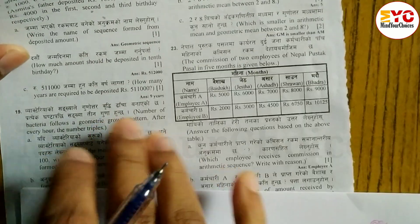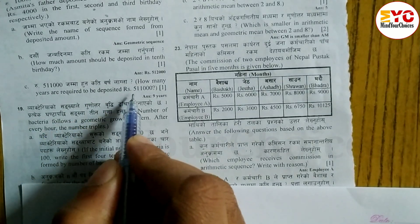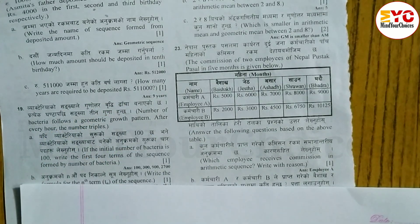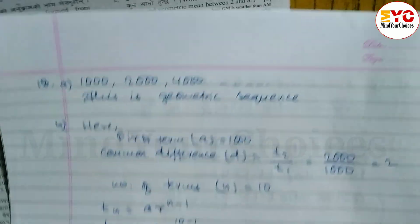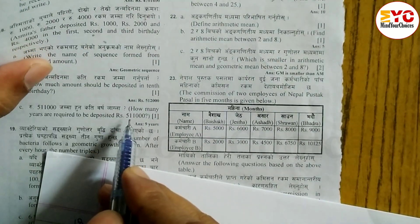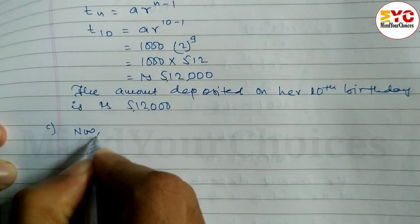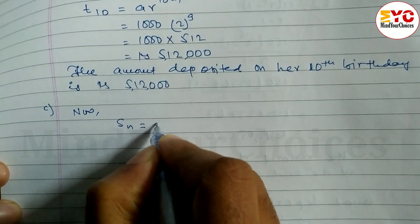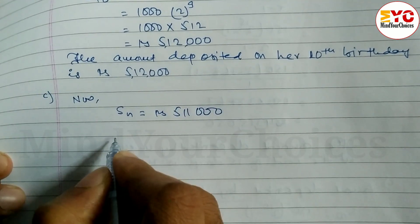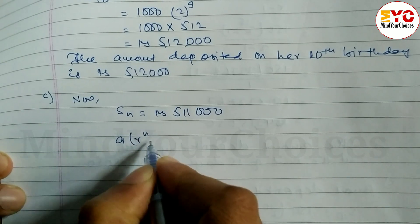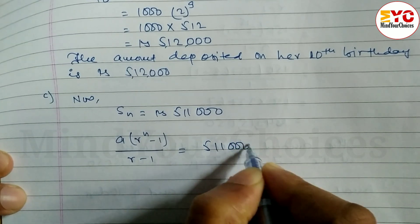Now look at Part C: how many years are required? What is n? To deposit rupees 511,000. The sum formula is: a times (r to the power n minus 1) divided by (r minus 1) is equal to 511,000.